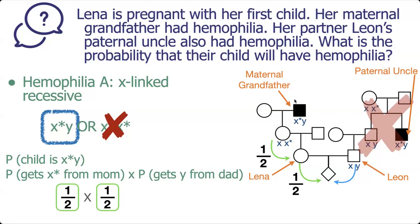Now let's look at Leon's side. We're calculating the chance the child gets a Y from Leon, from its dad, and that is one half because either the X or the Y will pass on. We have to calculate this because if the X passes on the child would be female — it could be a carrier — but it's impossible for the child to have hemophilia if Leon passes the X on. We add one fraction to our equation, multiply it because all events have to happen, and the answer to this question is 1 over 8.